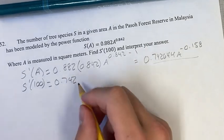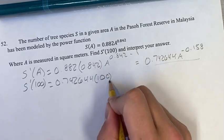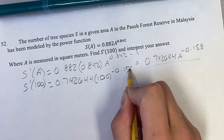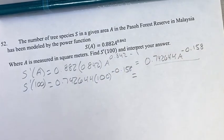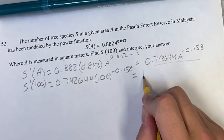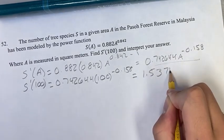So your 0.742644, times 100, to the negative 0.158. Obviously, you plug this into your calculator. You don't want to do it by hand, and that'll come out to roughly 0.374.